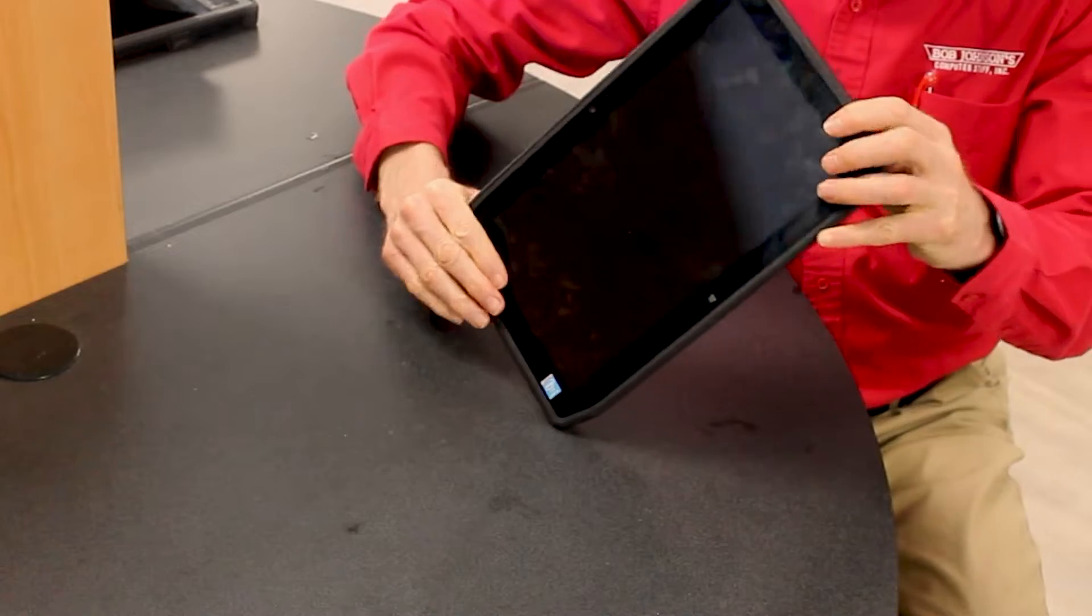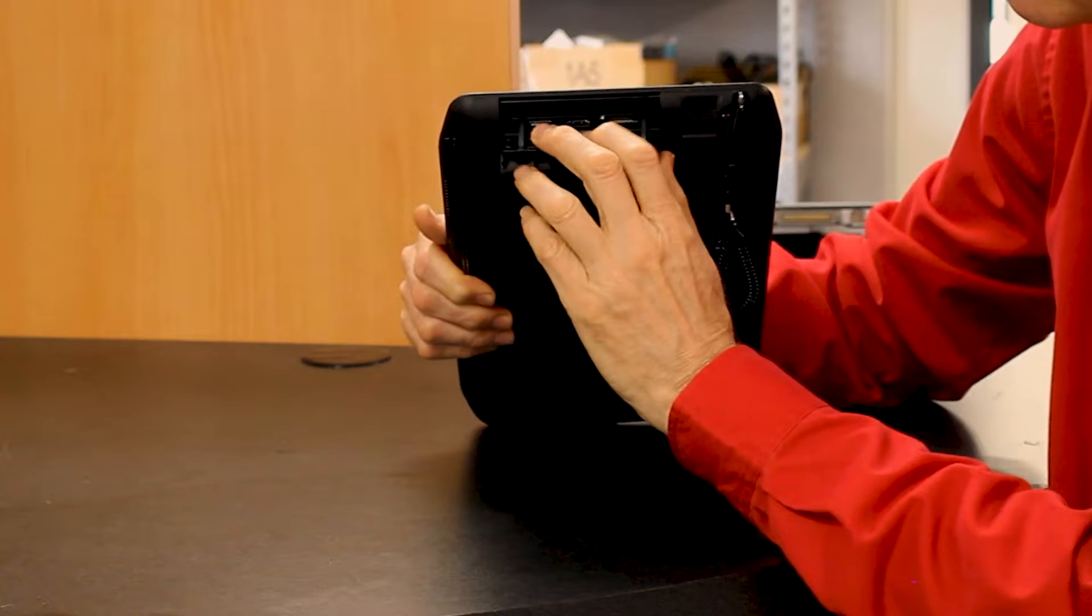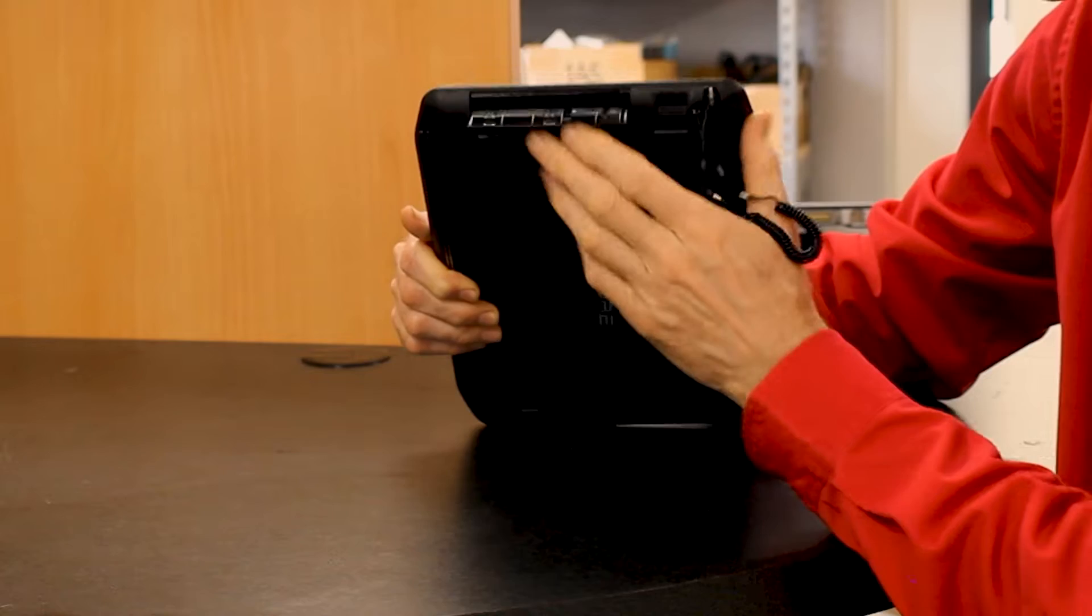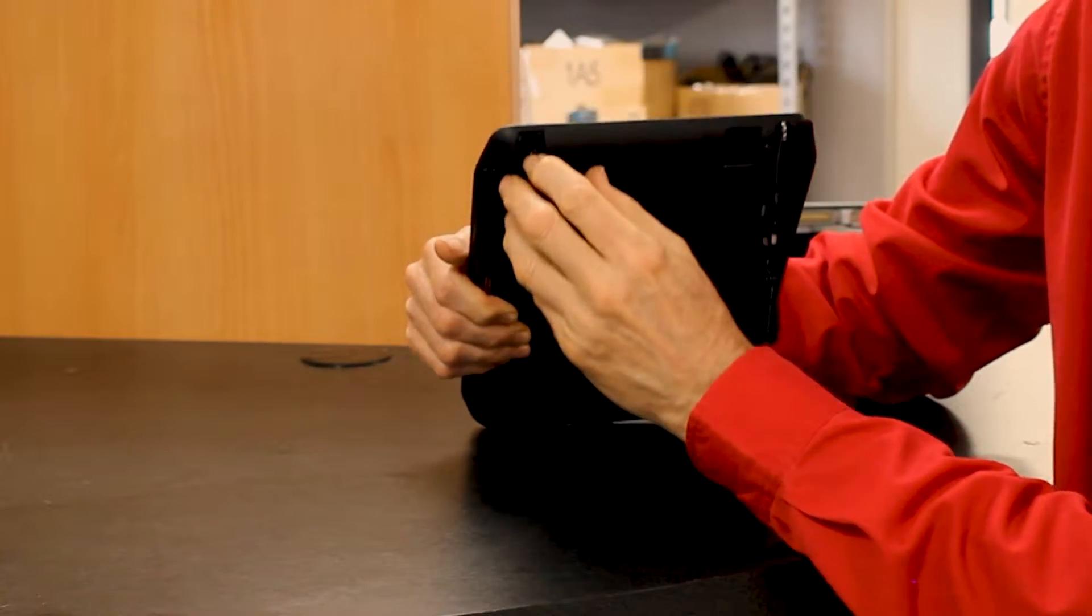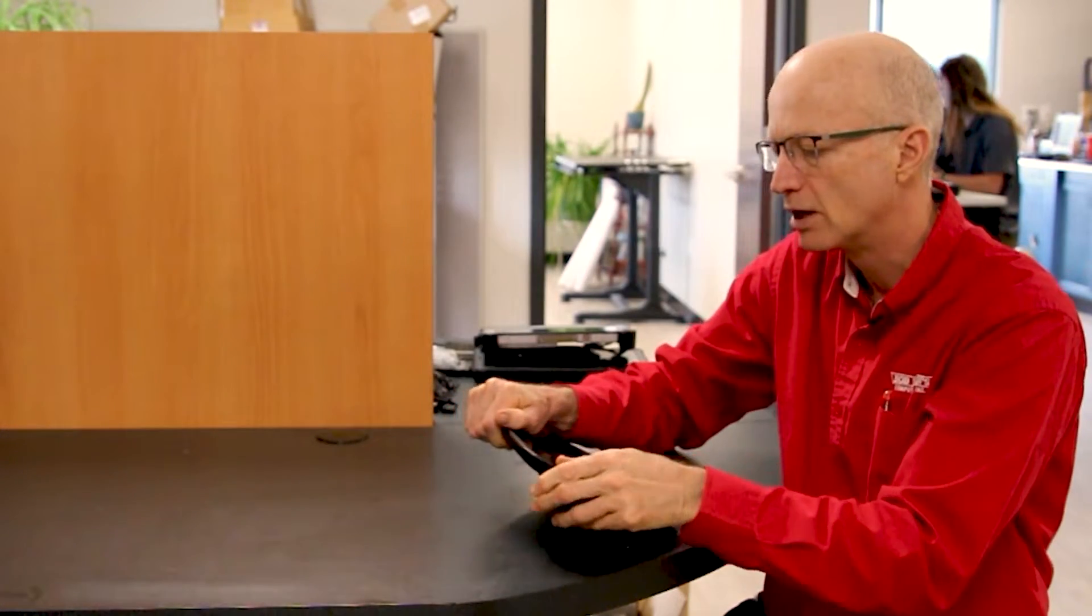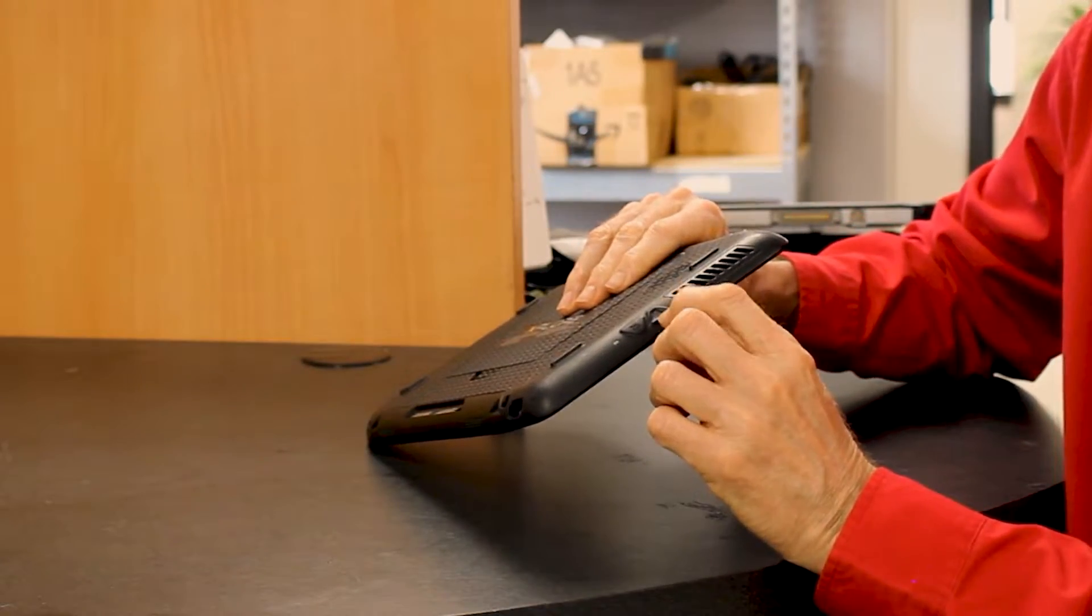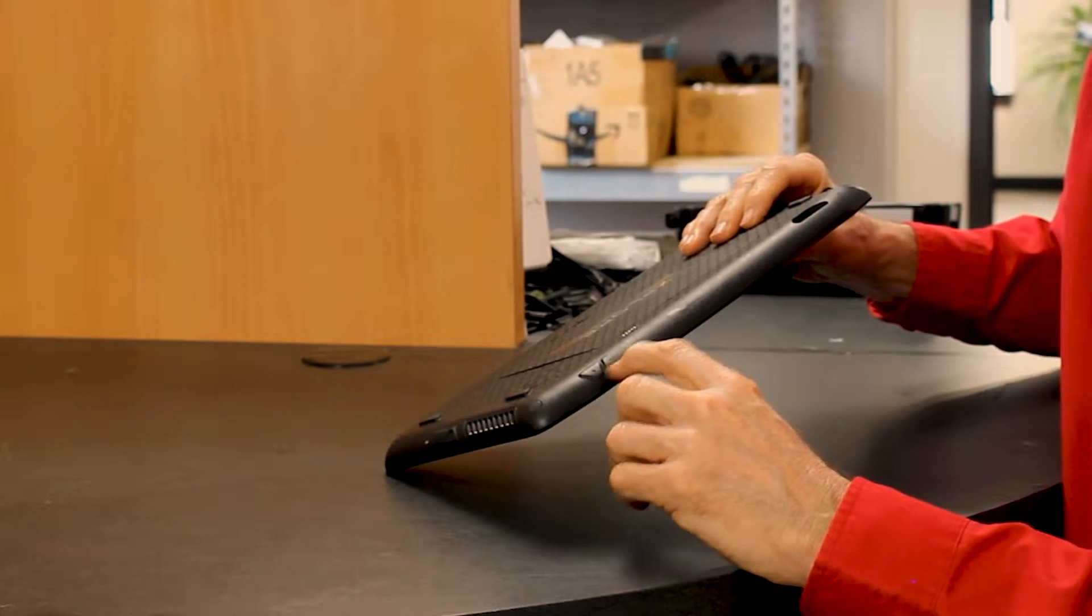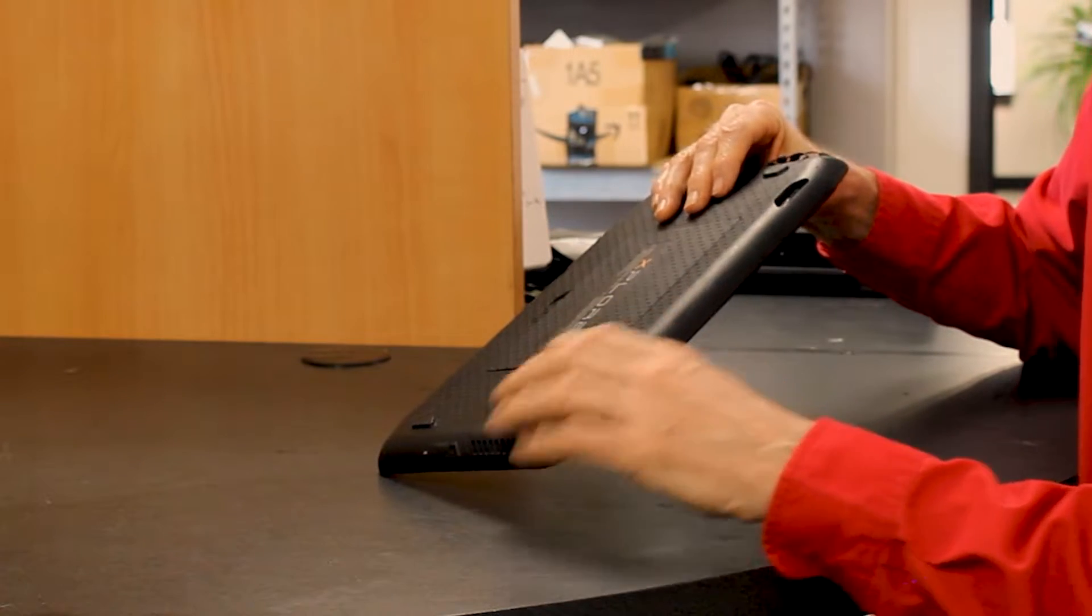Number 10 is all the ports. If you open up the port cover, you have a USB 3.0, an HDMI out, and an SD card reader right here. Then right here is your power port as well. On the other side is your power button, and down here on the other side is your plus and minus so you can increase or decrease the volume using these buttons.